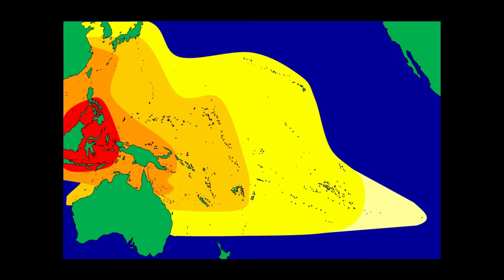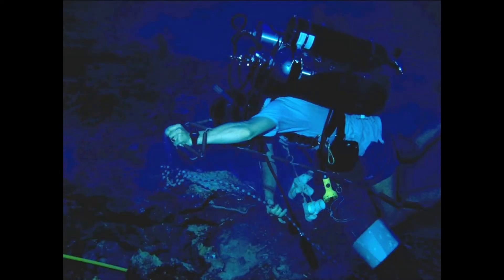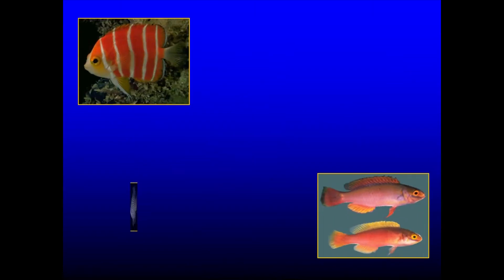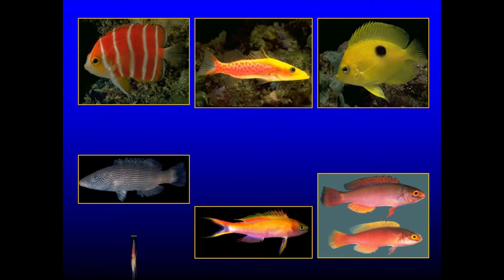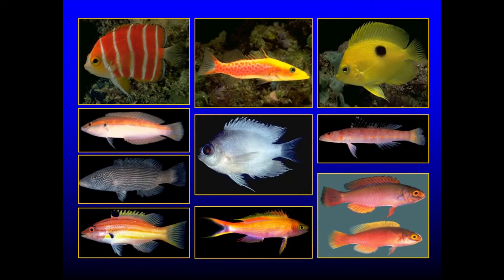When we first started doing systematic exploration of deep coral reefs in the 1980s, we started at Rarotonga in the Cook Islands. We did a series of dives using air and mixed gas scuba down to depths of 50 to 150 meters to see what we could find. Over the course of several expeditions, we found many new species of fishes — many more new species than we ever dreamed of finding. This is just a small sample of it.